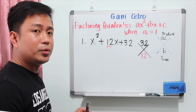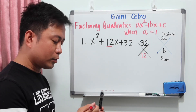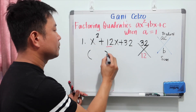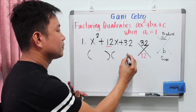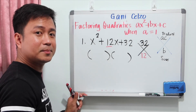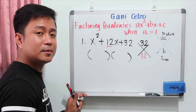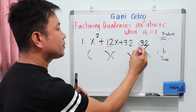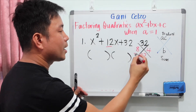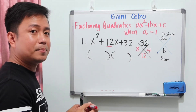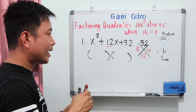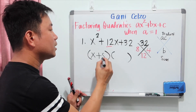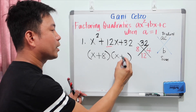Two numbers that multiply to 32 and add up to 12 are 8 and 4, because 8 times 4 is 32, and when you add them it's 12. So the factors will be x plus 8 times x plus 4.